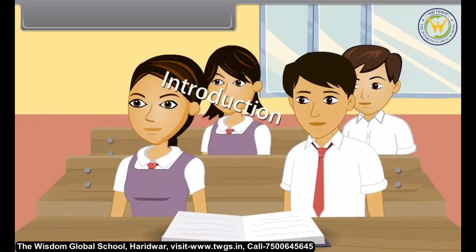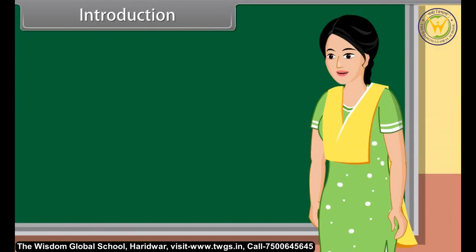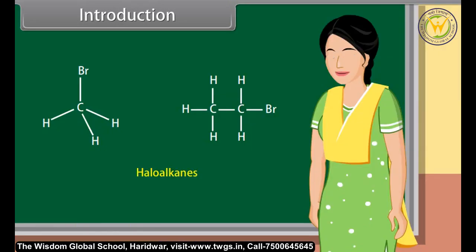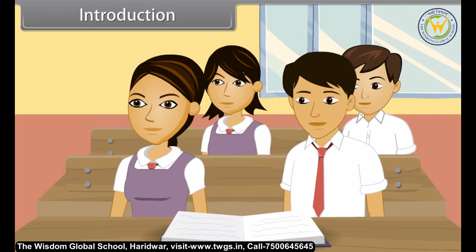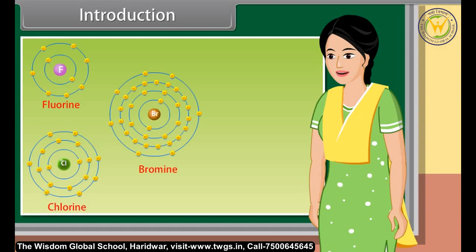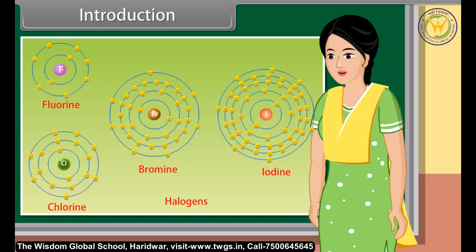Good morning teacher, good morning students. Today we learn haloalkanes and haloarenes. Haloalkanes are the chemical compounds in which one or more of the hydrogen atoms in an alkane have been replaced by a halogen atom. Halogens are the reactive non-metals having seven valence electrons.